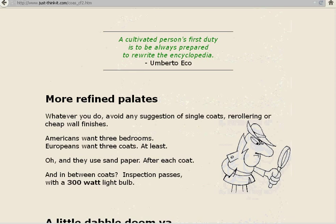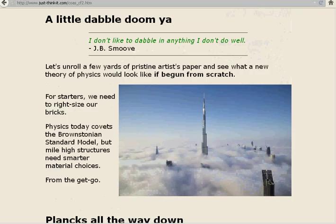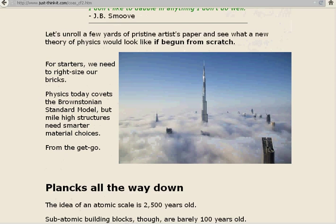Let's unroll a few yards of pristine artist paper and see what a new theory of physics would look like if begun from scratch. For starters, we need to right-size our bricks. Physics today covets the Brownstonian standard model, but mile-high structures need smarter building materials from the get-go. Planck's all the way down. The idea of an atomic scale is 2,500 years old. Subatomic building blocks, though, are barely 100 years old.